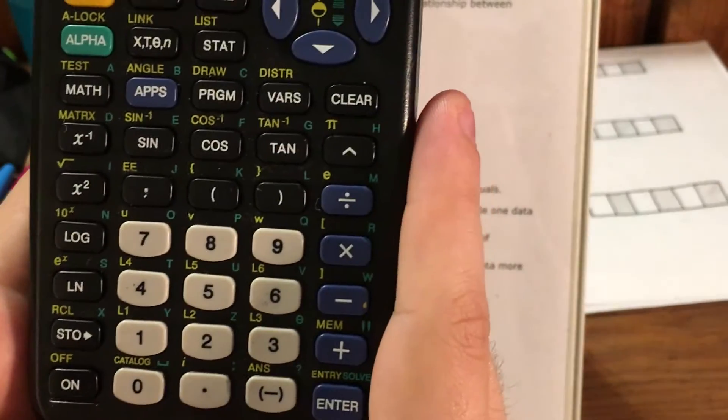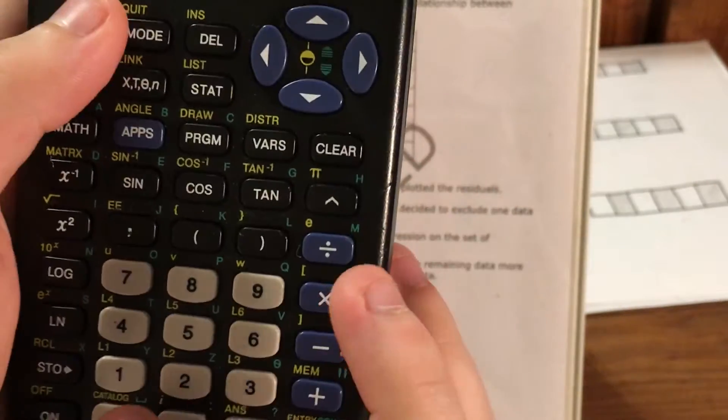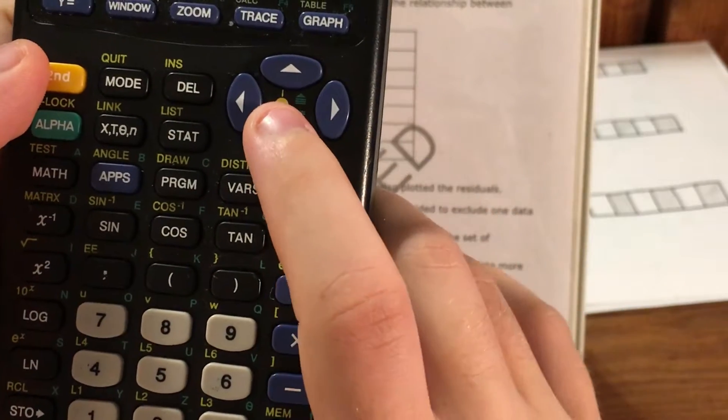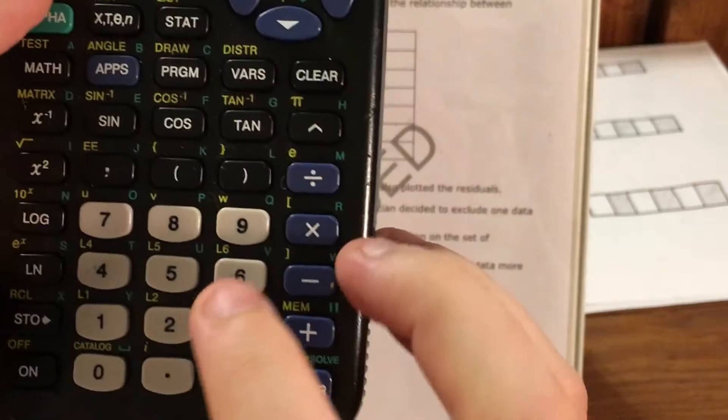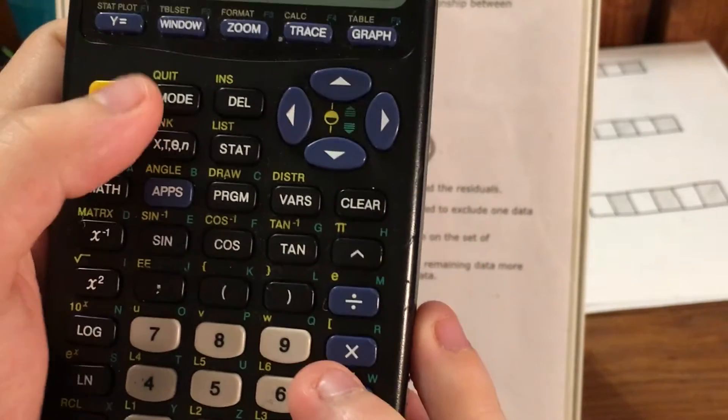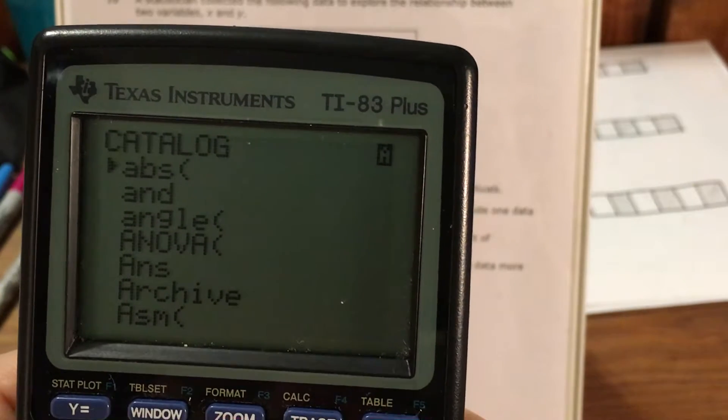Now the calculators can do a special function where they find something called R. In order to do that, I need to go to catalog. So I press 2nd and down here where it says catalog. I type that in. This is what my screen will look like.